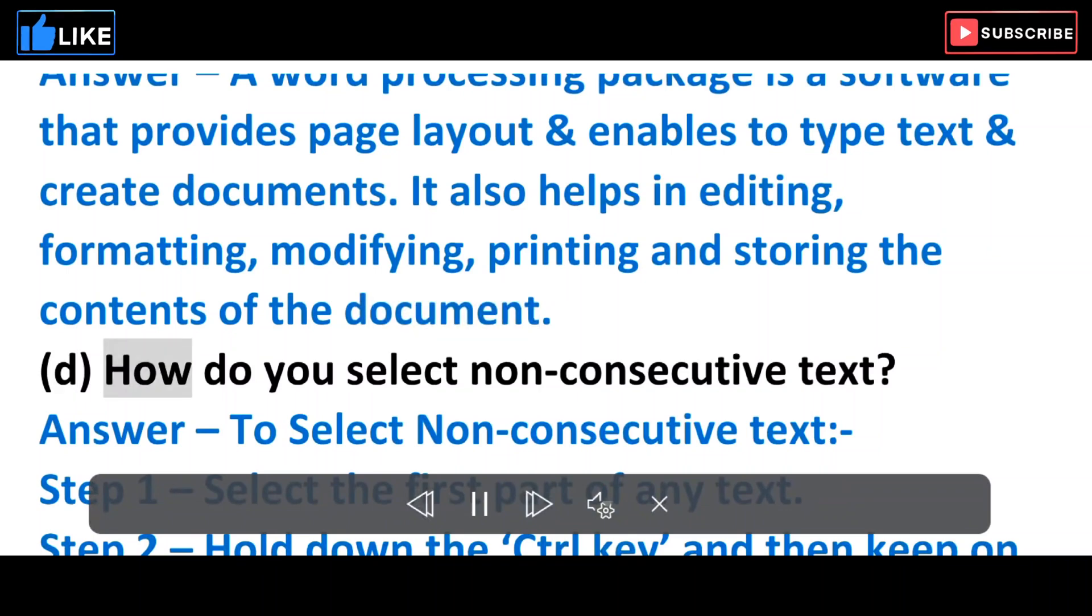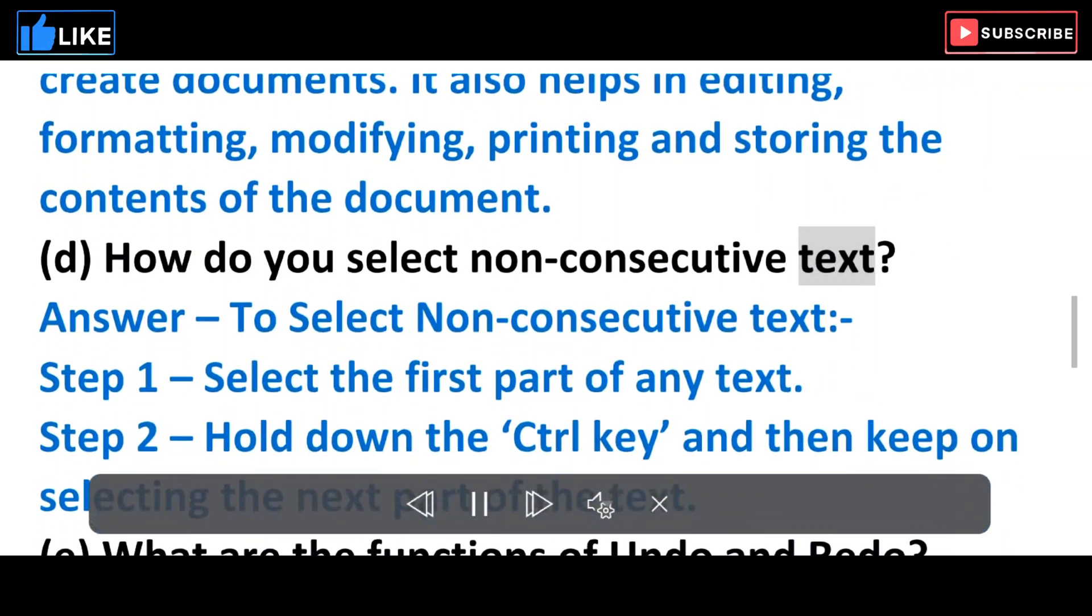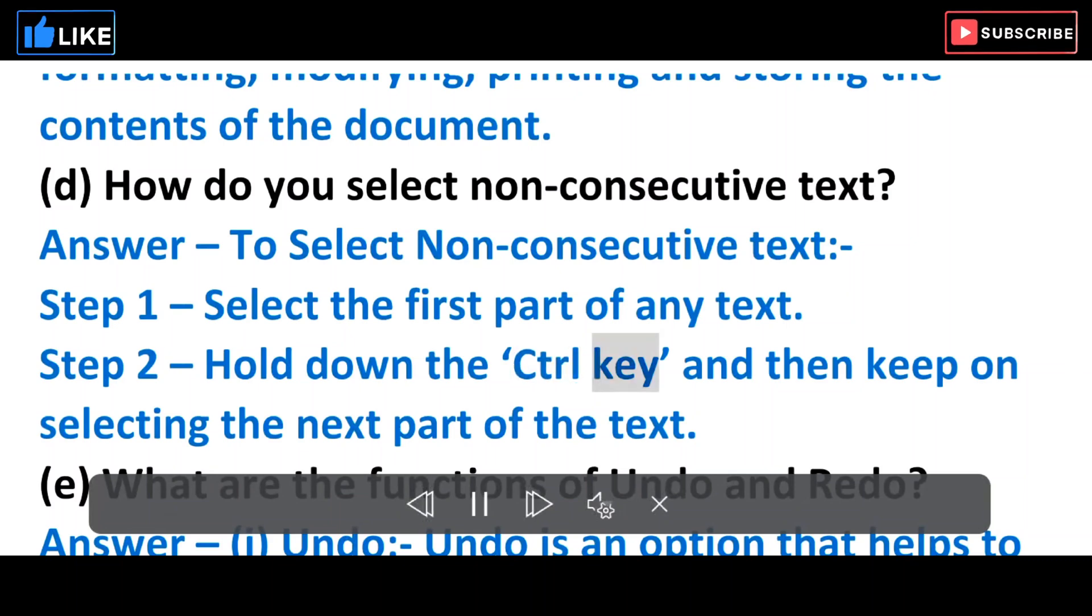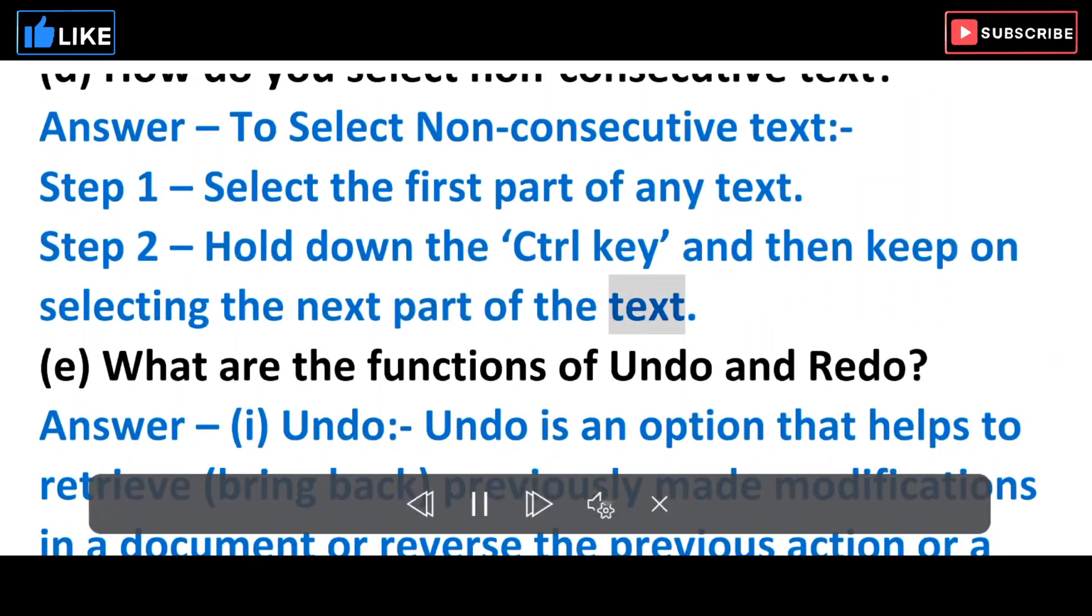D. How do you select non-consecutive text? Answer: To select non-consecutive text - Step 1: Select the first part of any text. Step 2: Hold down the control key, and then keep on selecting the next part of the text.